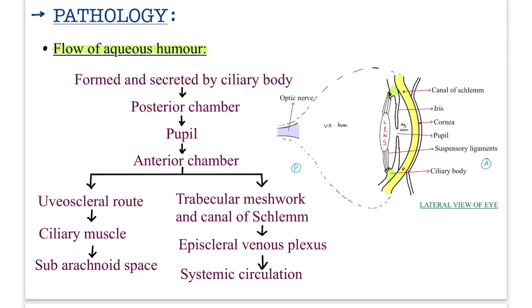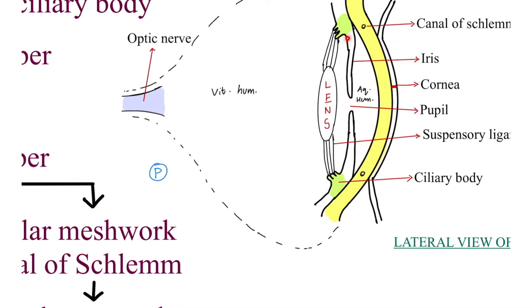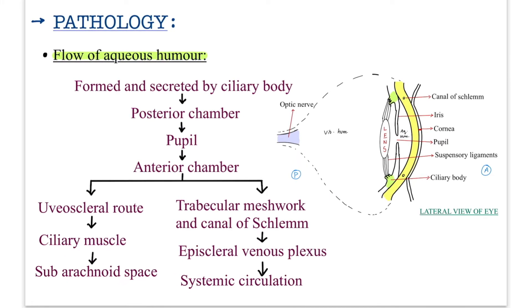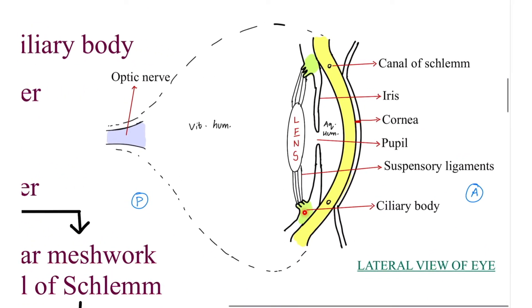The intraocular pressure in our eye is due to the liquid that flows in it — the aqueous humor. To understand how IOP is raised, we need to know where aqueous humor is formed, where it flows, and where it drains. It is formed and secreted by the ciliary body — the green structure in this diagram. From there, the aqueous humor flows to the posterior chamber, then through the pupil, and then into the anterior chamber.